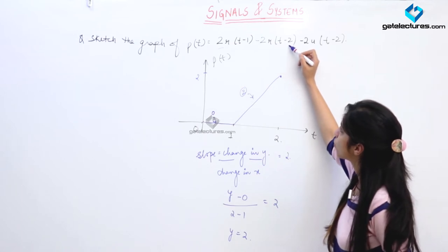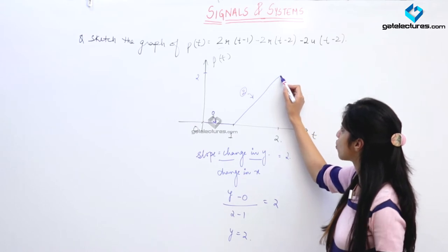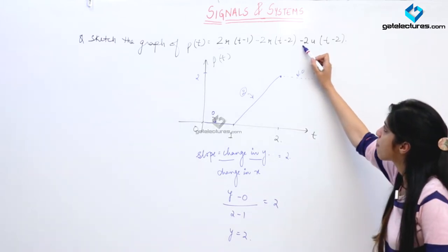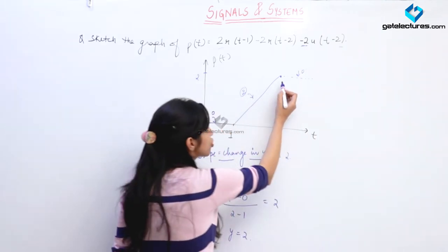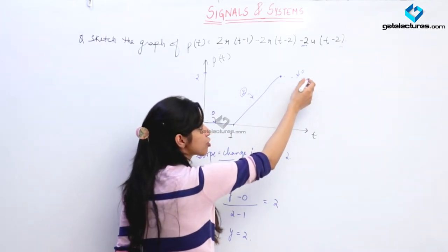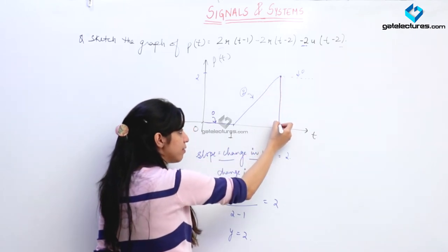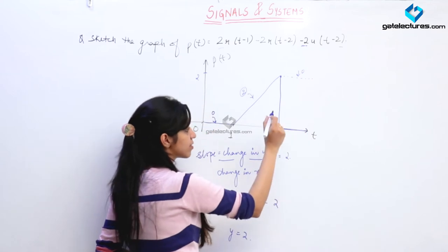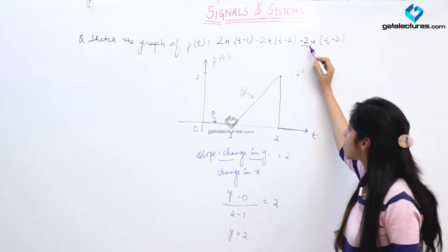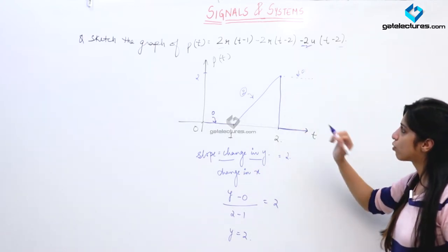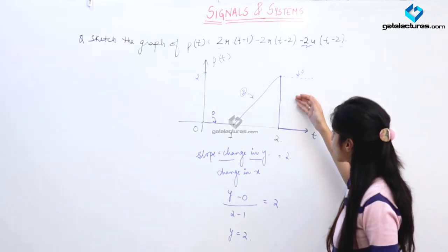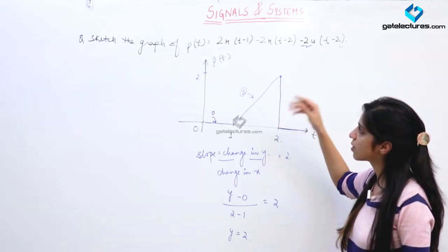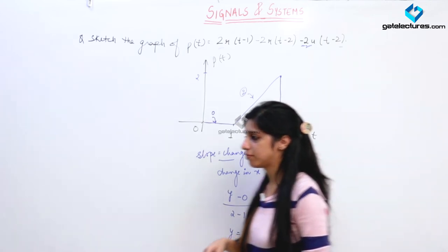At T equal to 2, the slope of the line changes by minus 2, which makes the slope 0. But we also have a step of size minus 2 at T equal to 2. So this line, which should have continued with slope 0 from T equal to 2, gets an abrupt step downward. This shape is known as a saw-tooth pulse, limited between T equal to 1 and T equal to 2. This is how we represent a saw-tooth pulse using a ramp signal as well as a unit step signal.